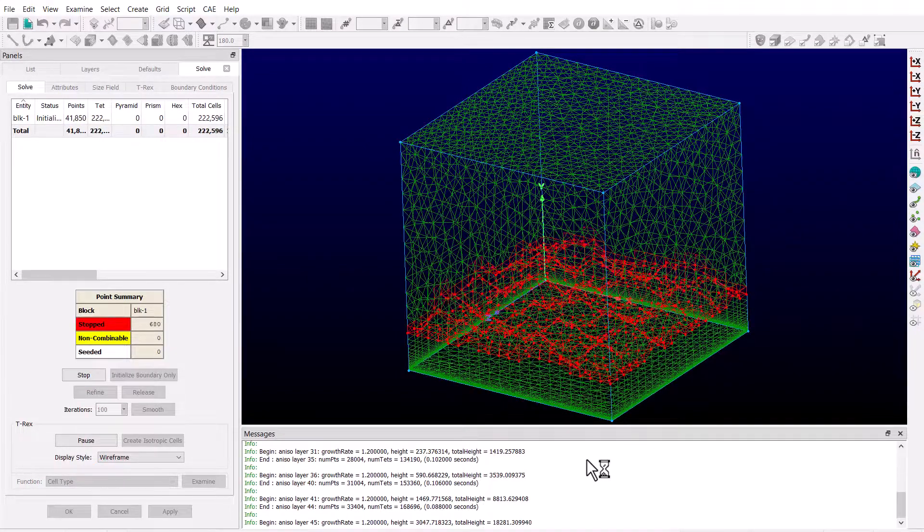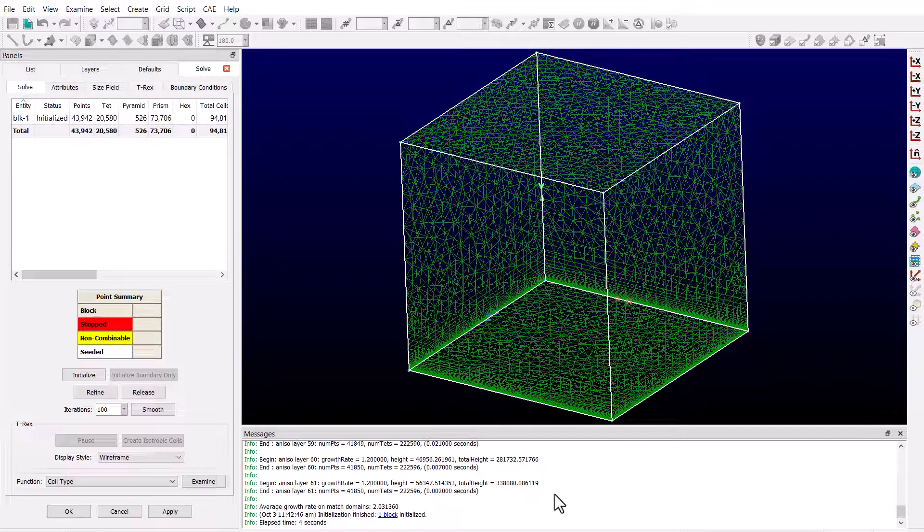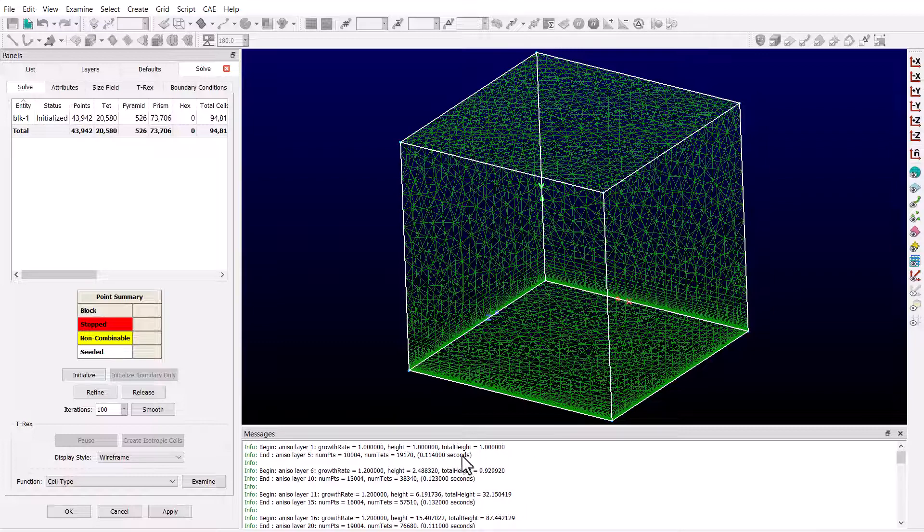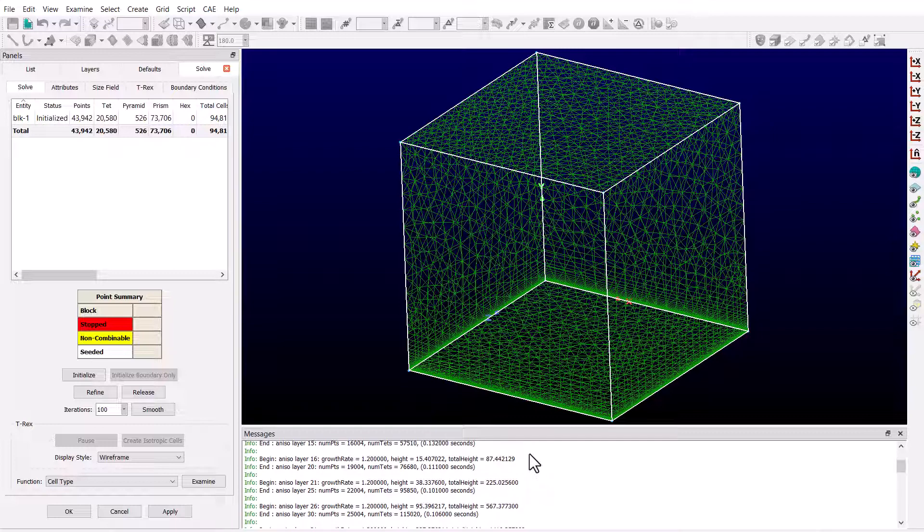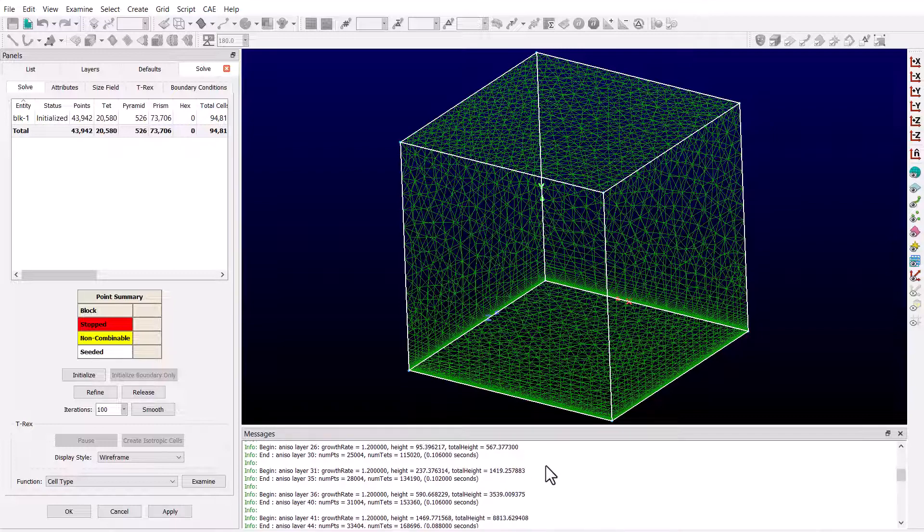Once again we see T-Rex doing its job beautifully, but if we look closely at the output in the messages window, we'll see that T-Rex starts by marching 5 layers at a time for the first 40 layers.